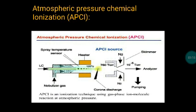Coming to the next technique: APCI, or atmospheric pressure chemical ionization. APCI is an ionization technique using gas-phase ion-molecule reactions at atmospheric pressure. It is a type of soft ionization technique and is a combination of chemical ionization and electrospray ionization with some deviation. For the working part: sample is injected into the capillary, and this capillary is heated by a heating coil.